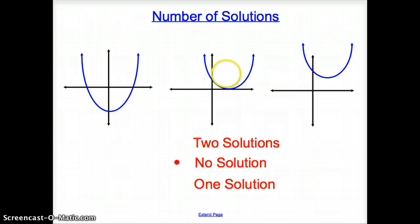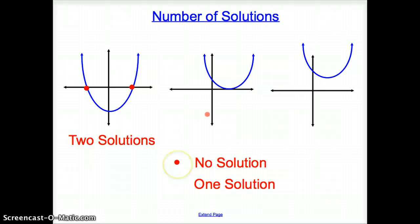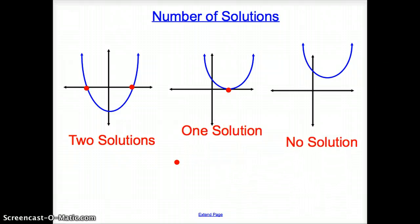And a couple more things. So number of solutions, if we have a parabola that intercepts the X-axis two times, how many solutions do you think we should have if we have an intersection there? And there, we will have two solutions. Well, here now, it only intercepts the X-intercept once. So how many solutions do we have? One solution. And if it does not intersect at all, we have no solution.